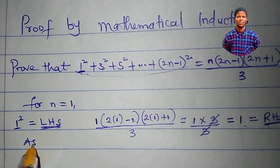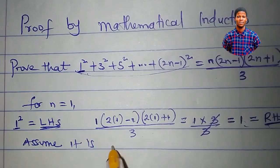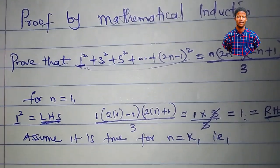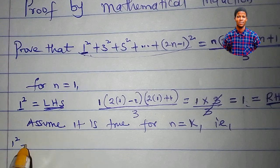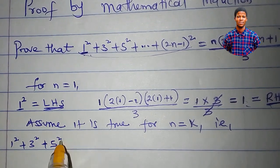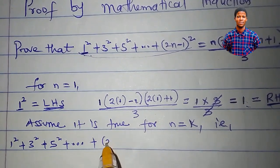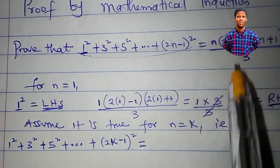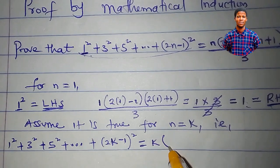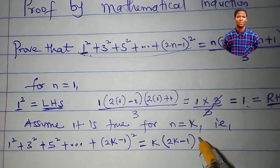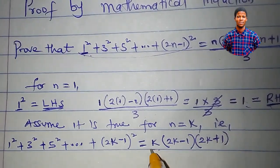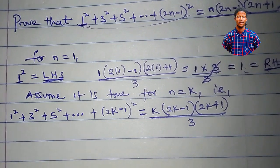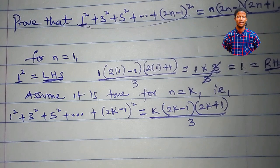In the next step, we will assume that it is true for some positive integer n equal to k. That is: 1 squared plus 3 squared plus 5 squared plus (2k minus 1) squared is equal to k times (2k minus 1) times (2k plus 1) all over 3. Having done this, I will now prove that it is true for n equal to k plus 1.